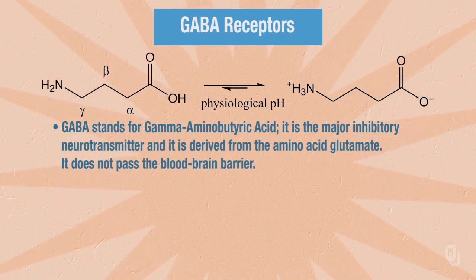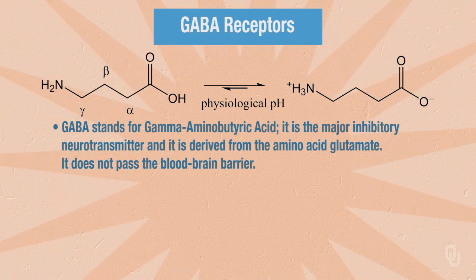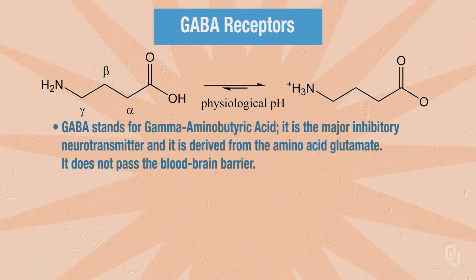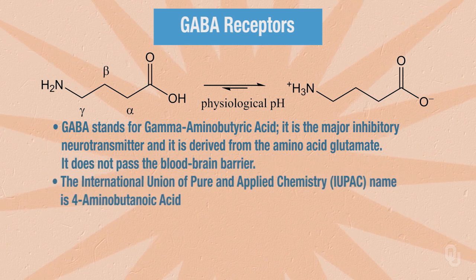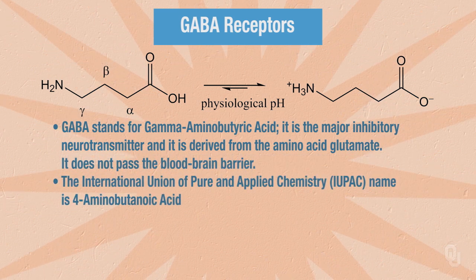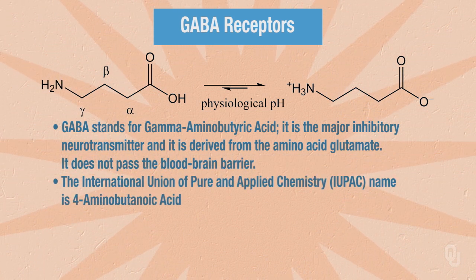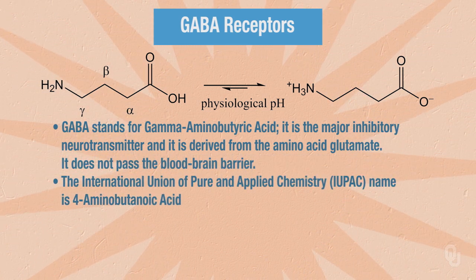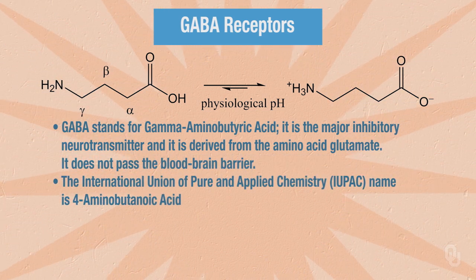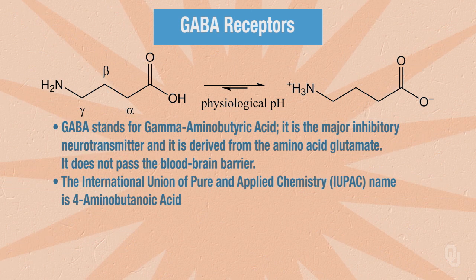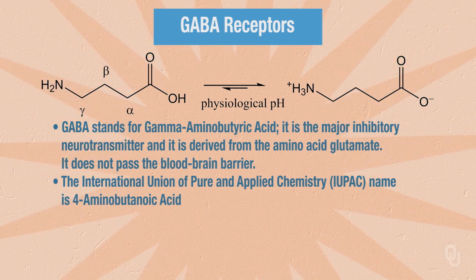Another name for GABA — and actually a more proper name according to the International Union of Pure and Applied Chemistry — is 4-aminobutyric acid.